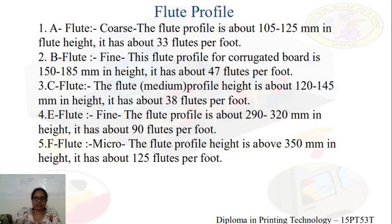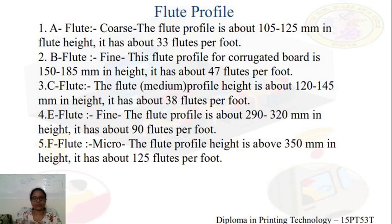The E flute is a fine profile with a flute height of about 290 to 320 mm and approximately 90 flutes per foot. The F flute is a micro-profile corrugated board with a flute height of about 350 mm and approximately 125 flutes per foot.